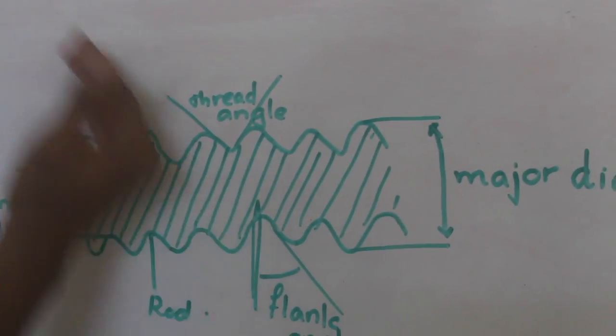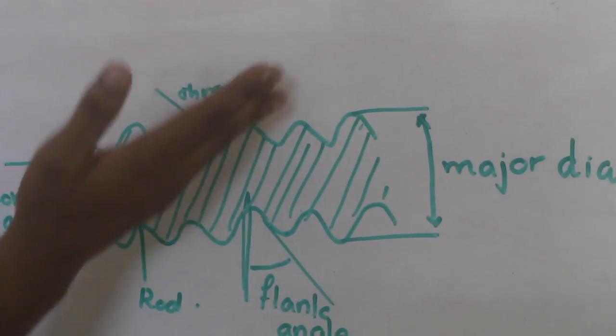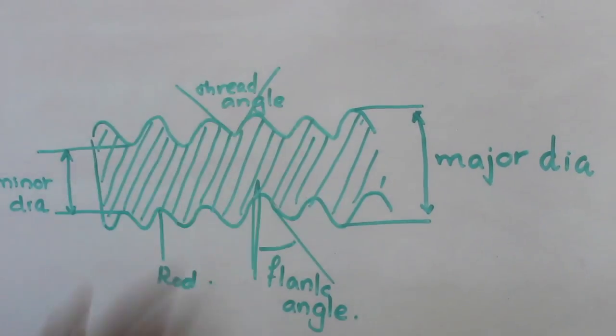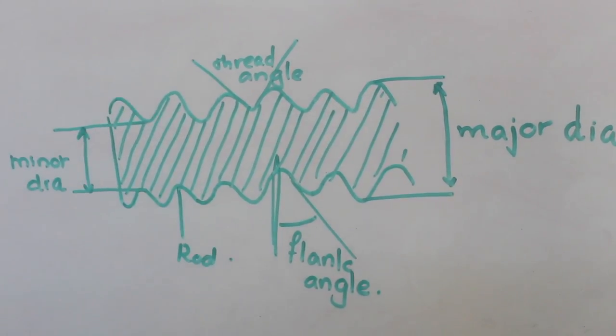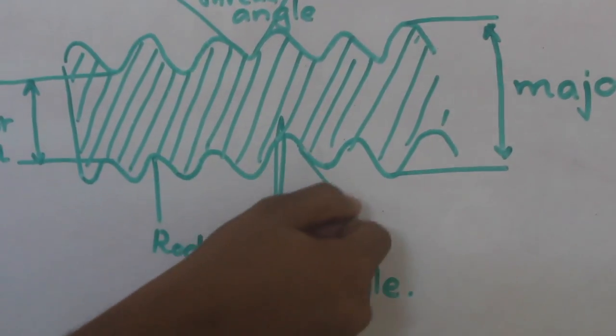If we are extending two lines which are passing through these two flanks, then the angle between them can be called as thread angle. And suppose if you are having a vertical plane, the angle made by this flank with this vertical can be called as flank angle.